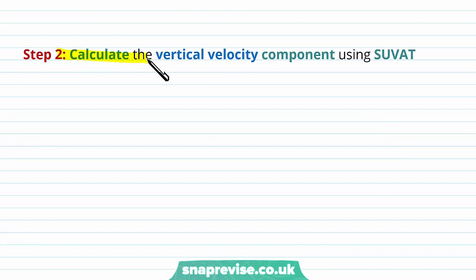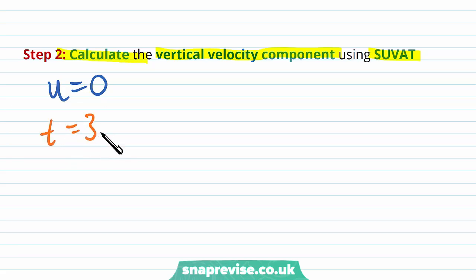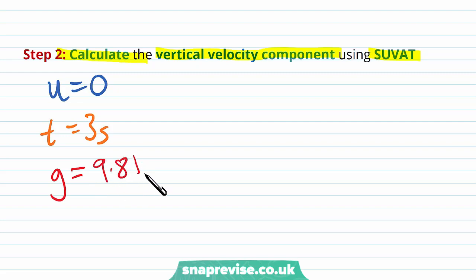Our next step is to calculate the vertical velocity component using SUVAT. We first identify the quantities: u is zero because the bullet has only been fired horizontally so it has no initial vertical velocity. We've been told the time t equals 3 seconds, and for vertical motion the acceleration is 9.81 meters per second squared due to gravity.